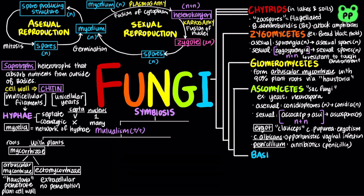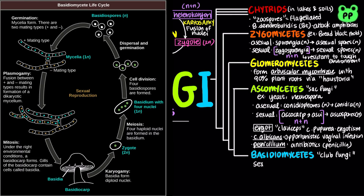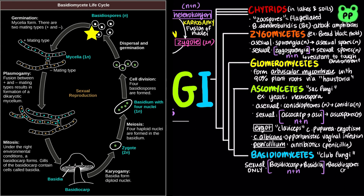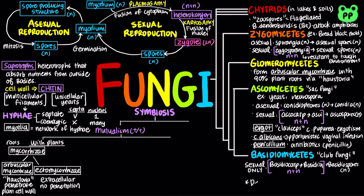Most of the mushrooms we eat belong to the phylum Basidiomycetes, also known as club fungi. They reproduce sexually through heterokaryotic fruiting bodies known as basidiocarps, which contain club-like structures known as basidia that produce sexual spores known as basidiospores. Deuteromycetes refer to fungi with no known sexual stage.